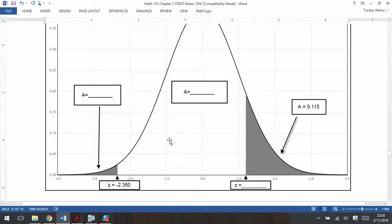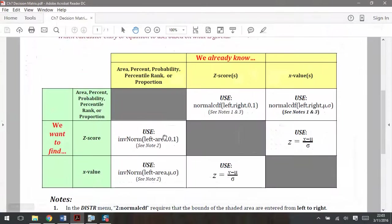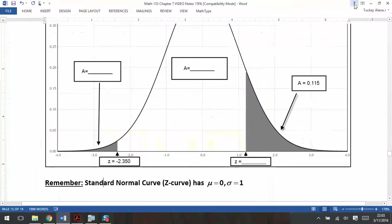We have to figure out what we can find first. If we look over here on the left tail, we can see that we already know a z-score and we're looking for the area that corresponds to that z-score. So if we go back to our Chapter 7 Decision Matrix, if you already know a z-score, you're in this middle column and you're looking for the area in the left-hand tail, which means you're going to be using normal CDF left, right, comma, zero, comma, one or lower, comma, upper, zero and one.